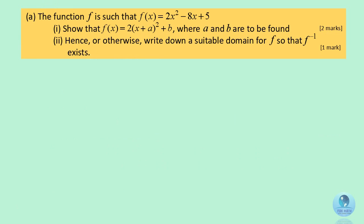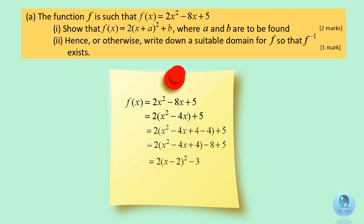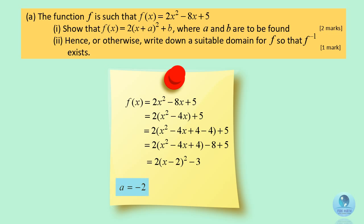To answer the first part, you are asked to complete the square for this quadratic equation. We take out the number 2, and it becomes 2 multiplied by x squared minus 4x plus 5. Finally, we get 2 multiplied by (x minus 2) to the power of 2, minus 3.